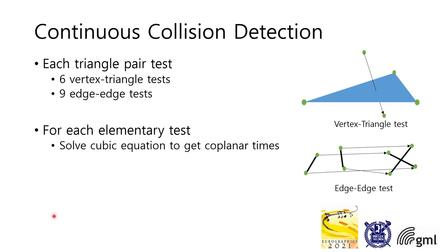For finding collisions with continuous time, we have to check all pairs of triangles. For each triangle pair test, 15 elementary tests are needed: